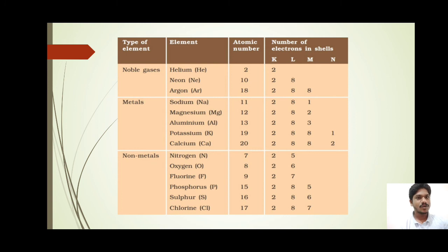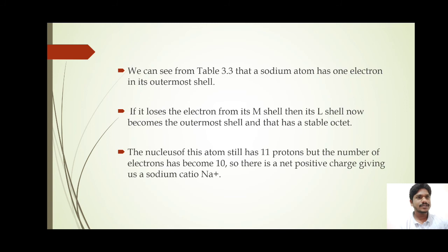If you look at that table, sodium has one electron in its outermost shell. If it loses one electron from the M shell, then the L shell becomes the outermost shell, and it has a complete stable octet. The number of protons is always equal to the number of electrons in an atom; therefore, an atom is electrically neutral.